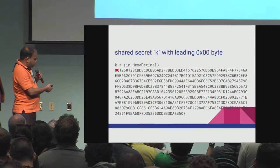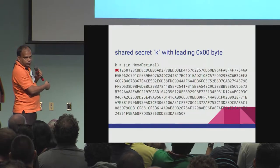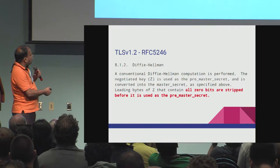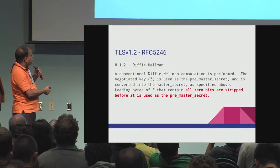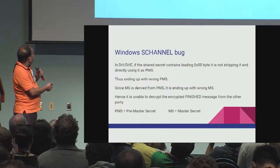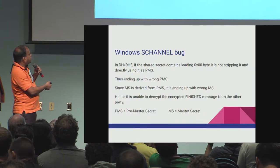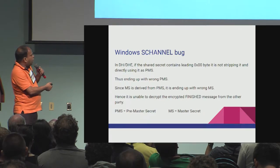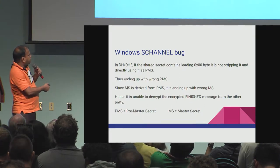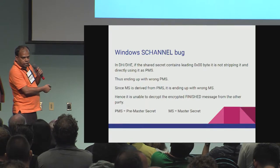Sometimes what can happen is the resulting shared secret may contain a leading 00 byte. In such cases, the TLS 1.2 RFC says you have to remove the leading 00 byte and use the remaining bytes as the pre-master secret. What I found is Windows S-Channel TLS implementation is not RFC compliant — it is not stripping the leading 00 byte, directly taking the result as the pre-master secret, and hence ends up with the wrong master secret, unable to decrypt the finish message from the other side.